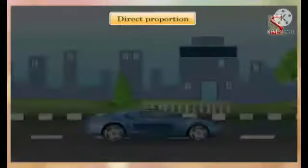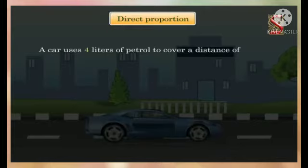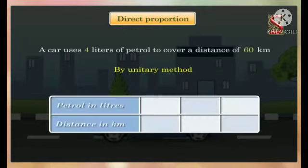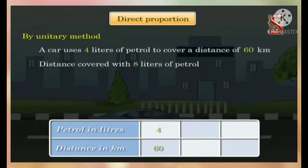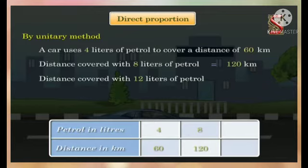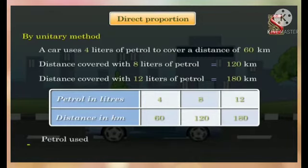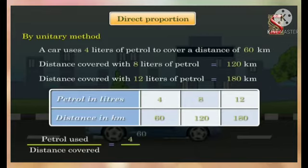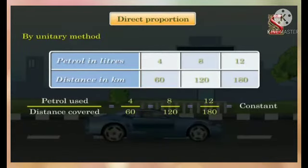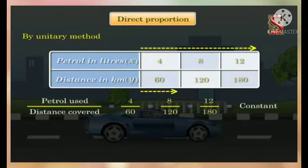Let us assume that a car uses four litres of petrol to cover a distance of 60 kilometres. By the unitary method: distance covered with 8 litres of petrol equals 120 kilometres, and distance covered with 12 litres of petrol equals 180 kilometres. Here also, we notice that the ratio of petrol used to distance covered is constant. Let us assume petrol in litres as x and distance in kilometres as y. As the value of x increases, the value of y also increases and the ratio x/y is constant.